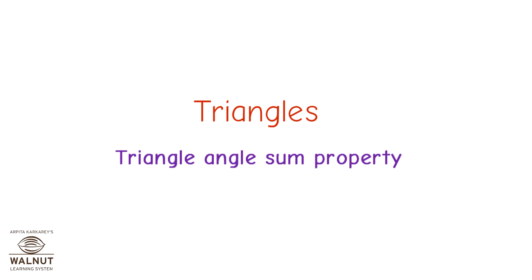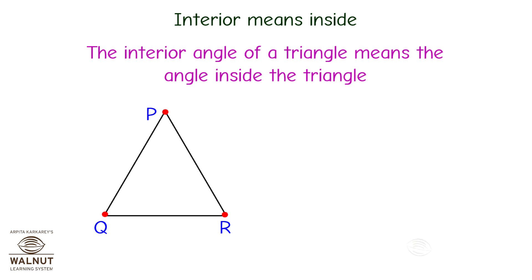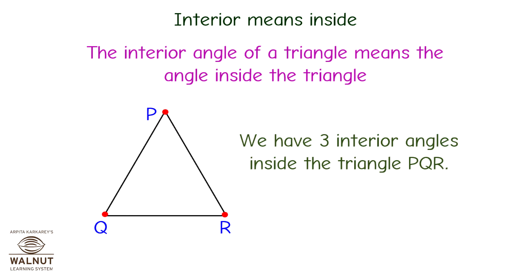Triangles — Triangle Angle Sum Property. Interior means inside. The interior angle of a triangle means the angle inside the triangle. We have three interior angles inside the triangle.